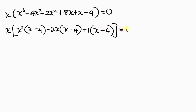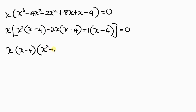Now notice that x minus 4 is common across all groups, so we factor that out: (x minus 4) times (x squared minus 2x plus 1) equals 0.